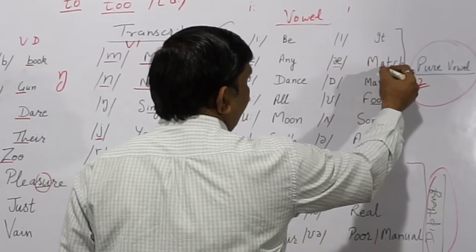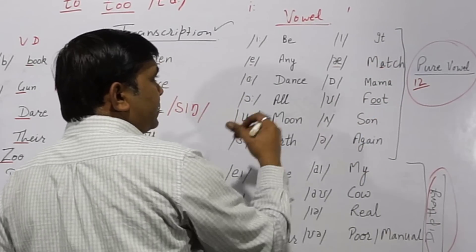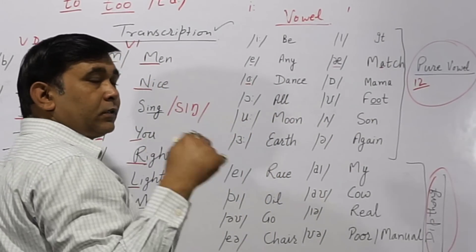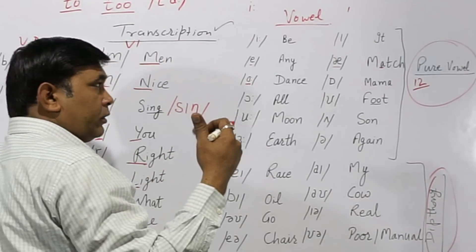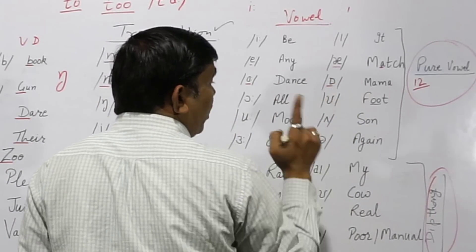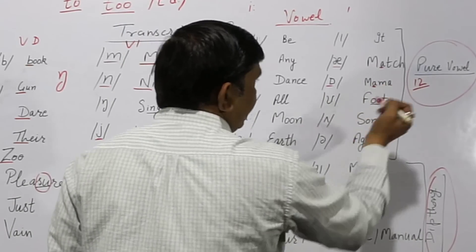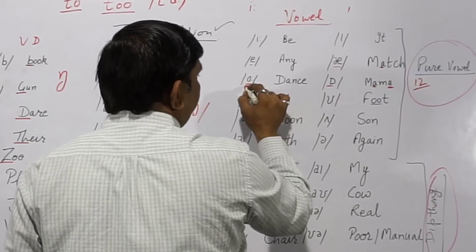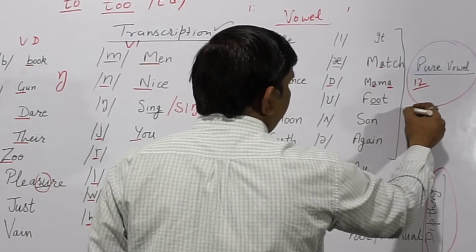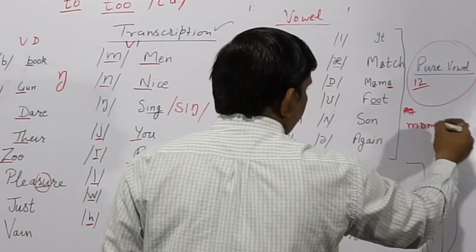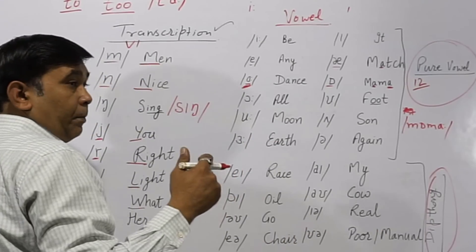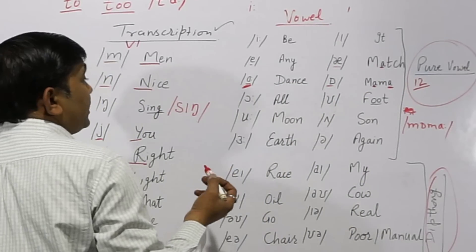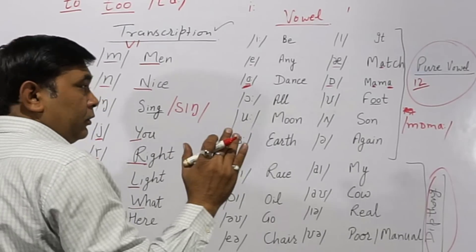Next is /ɑː/ — long — as in 'dance'. Then /ɒ/ — small o — as in 'mama'. And this long /ɔː/ — written slightly differently — also like 'mama' but longer. So this last one is long and this one is short.